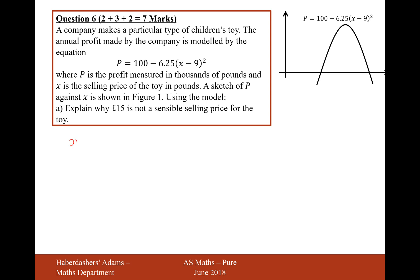So if we were to put X equals 15 in, we would get P equals 100 minus 6.25 times 15 minus 9 squared. Let's just work out what this value would be here. So on the calculator, 100 minus 6.25 times 6 squared, because that's 15 minus 9. That would give us 125 pounds, minus 125 pounds. So there would be a loss.